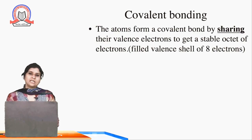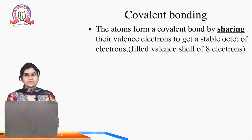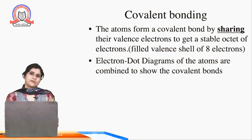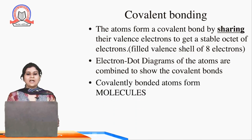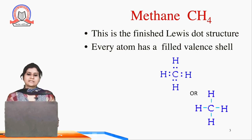As we all know, in chemical bonding, when the bond formation takes place by the sharing of electrons between two atoms, it is known as covalent bonding. The outermost valency is filled with 8 electrons. Electron dot diagrams of the atoms are showing covalent bonding — covalently bonded atoms form molecules — and we are discussing some examples.